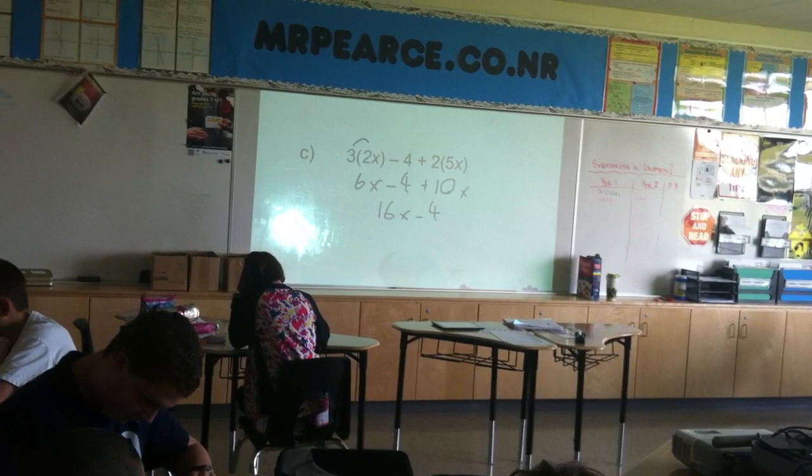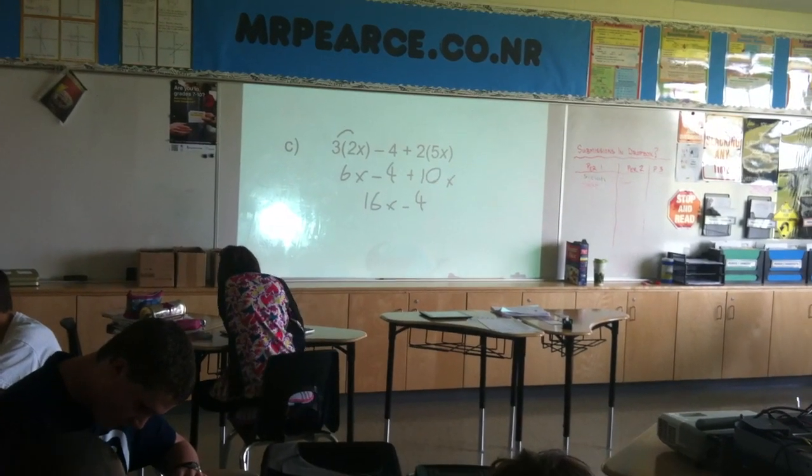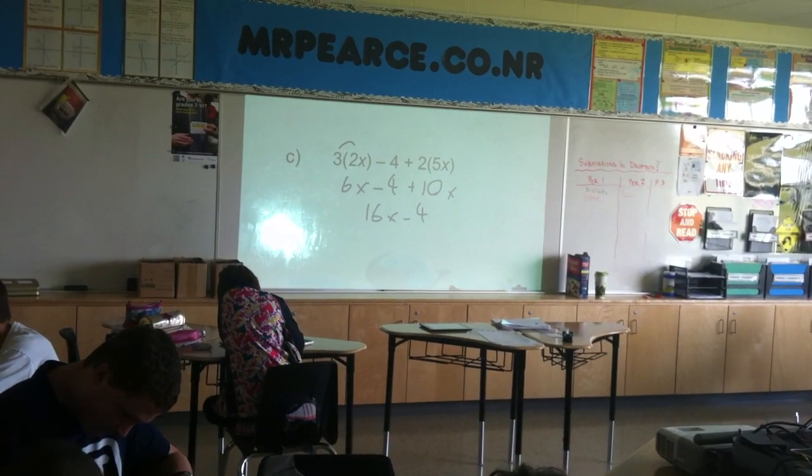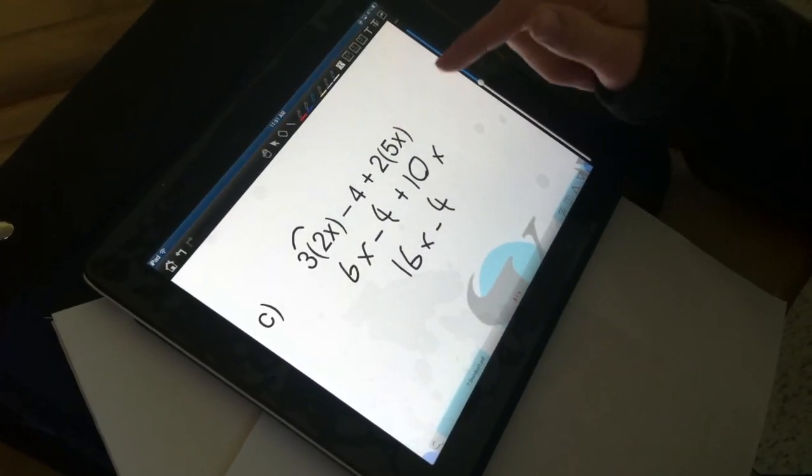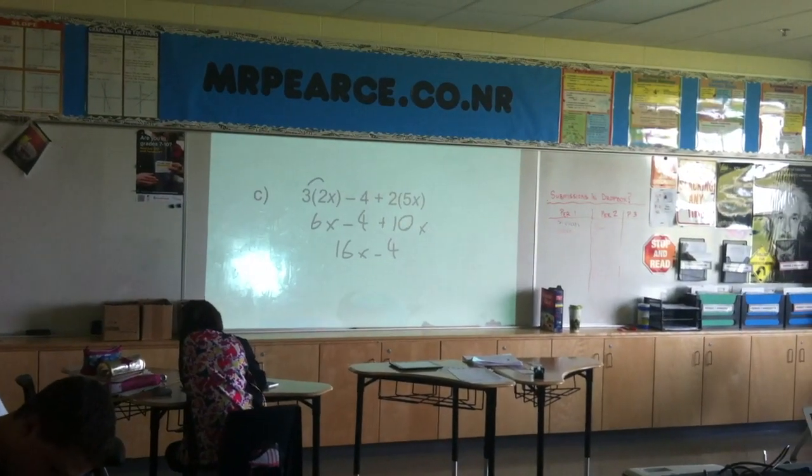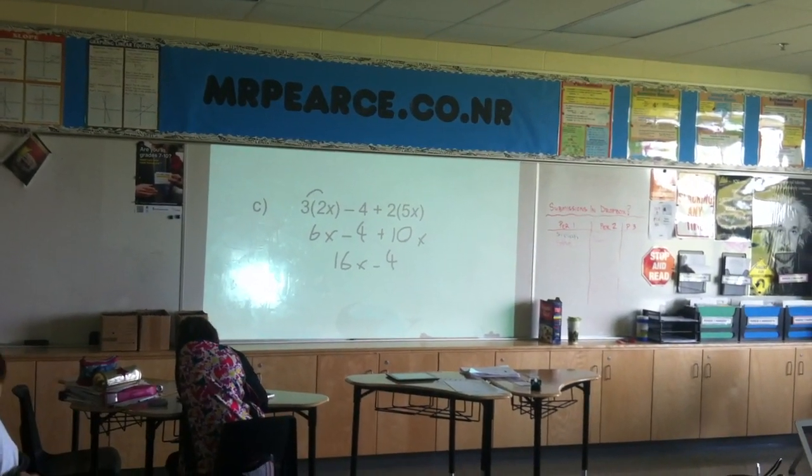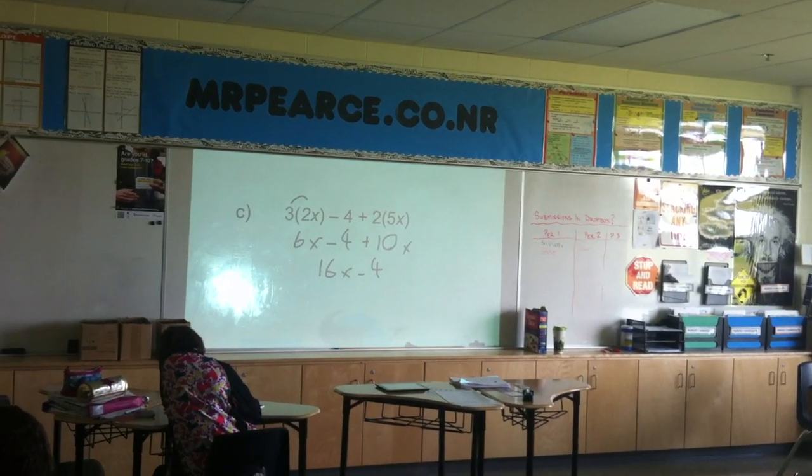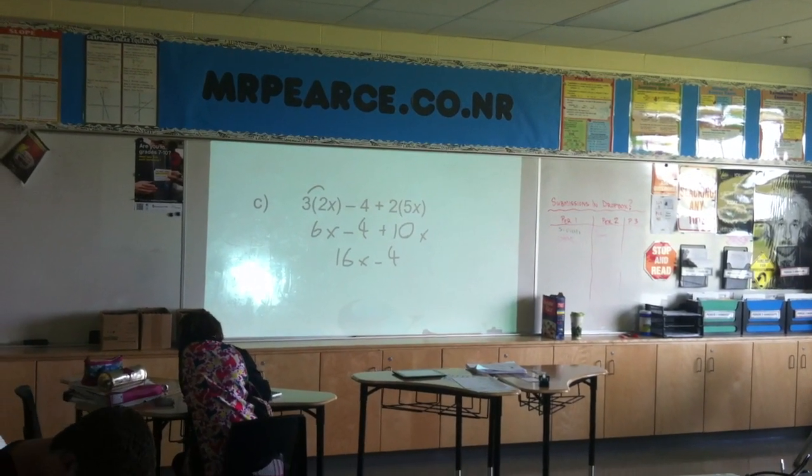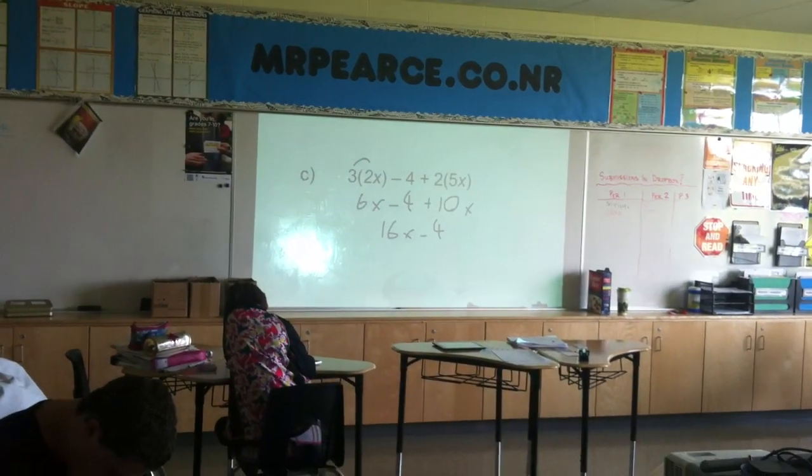Well, what I did is first I did 3 times 2, and that is 6, so it's 6x. And then I did the same over here, so 2 times 5 is 10, so 10x. Then I added my like terms together, which was 6 and 10, so that was 16x. And then there was nothing for the constant, so it's just negative 4.